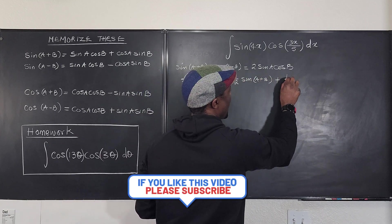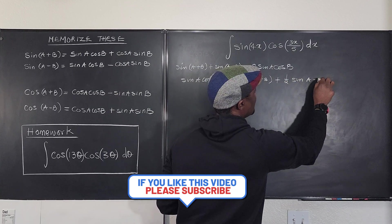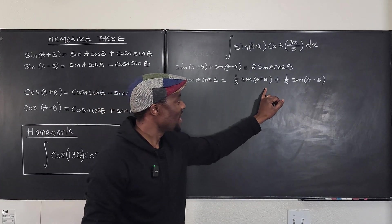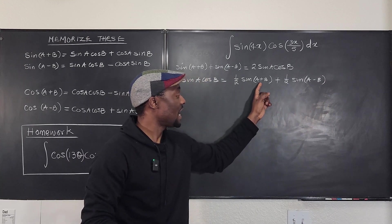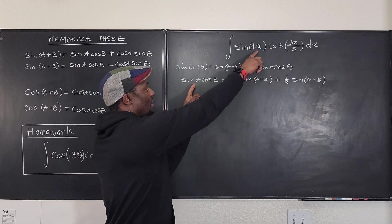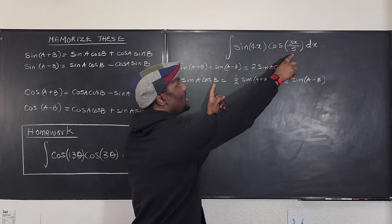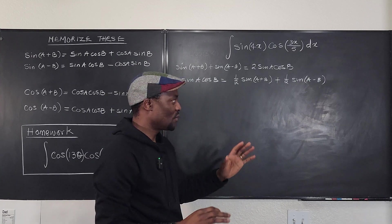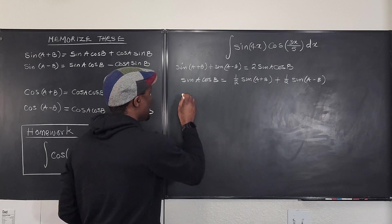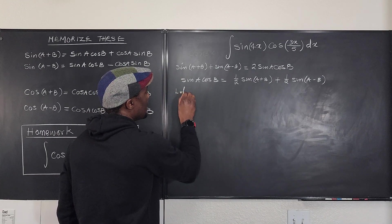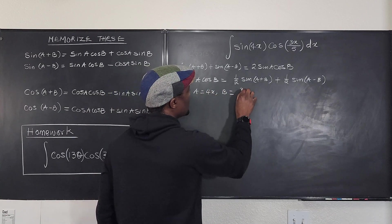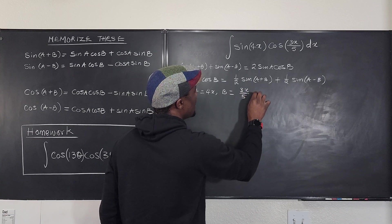Clearly we can integrate this if only we know what A+B is and what A-B is. Well, from what we have, our A is going to be 4x and B is going to be 3x/5. So let's quickly evaluate what A+B and A-B are, and then we can integrate. Let A be equal to 4x and B be equal to 3x/5.